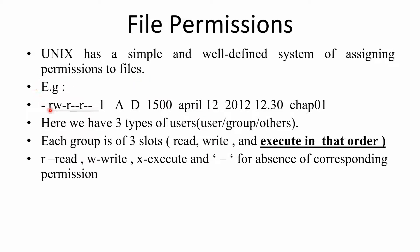This is the output of a typical ls command. The hyphen indicates the type of file is a regular file. Next we have the permissions associated with the different types of users. We have three types of users: user or owner, group, and others. We have three permissions: read, write, and execute, and it has to be in this order only. R denotes read permission, W denotes write permission, and X denotes execute permission.